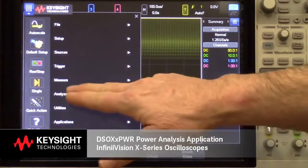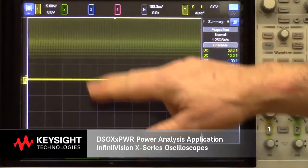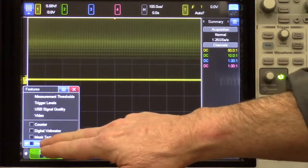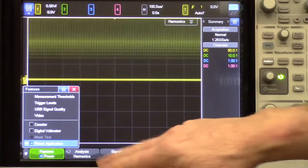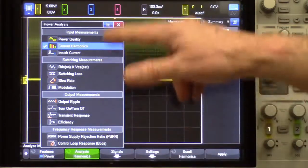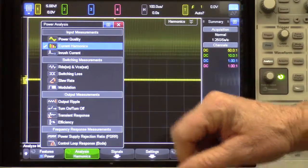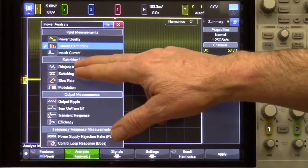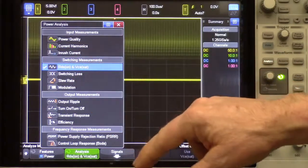Next, I'll go into the Analyze menu, for which we have a front panel key. Then select the power application. Next, I'll pop up my list of possible measurements I can perform with the power option. And by the way, we have videos on all of these. And I'm going to select RDS-ON and VCE.